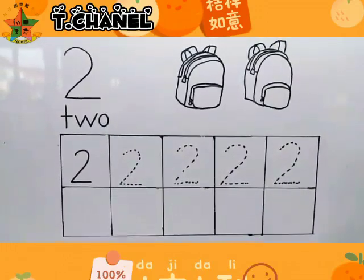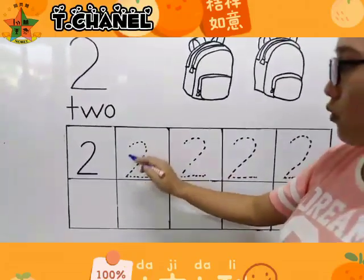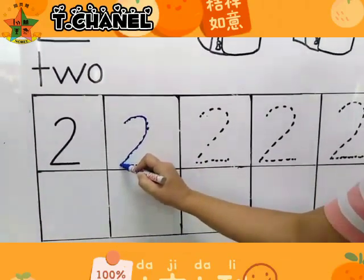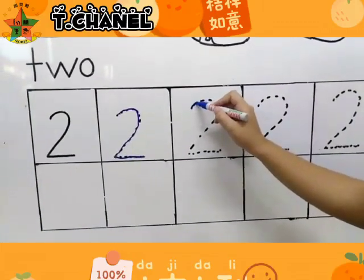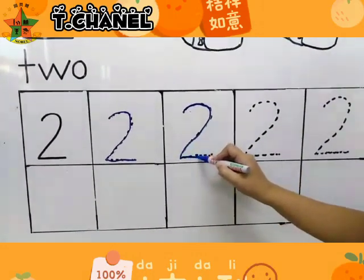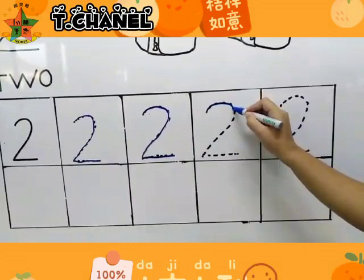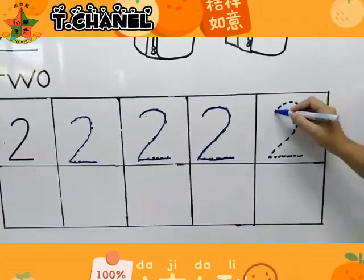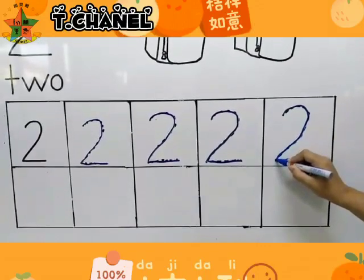Now we are going to write number 2. Okay children, you have to follow the dotted line and write number 2. Start from here. Down. Go to the right. Okay. One more time. The last one.